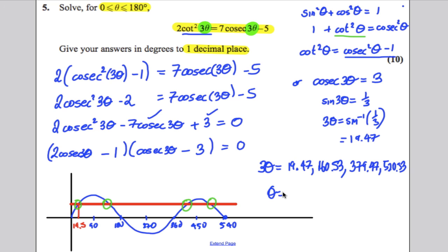Theta, therefore, dividing all of those by three and rounding to 1 decimal place would be 6.5 degrees, 53.5 degrees, 126.5 degrees, and 173.5 degrees. And there are all your answers for 10 marks.